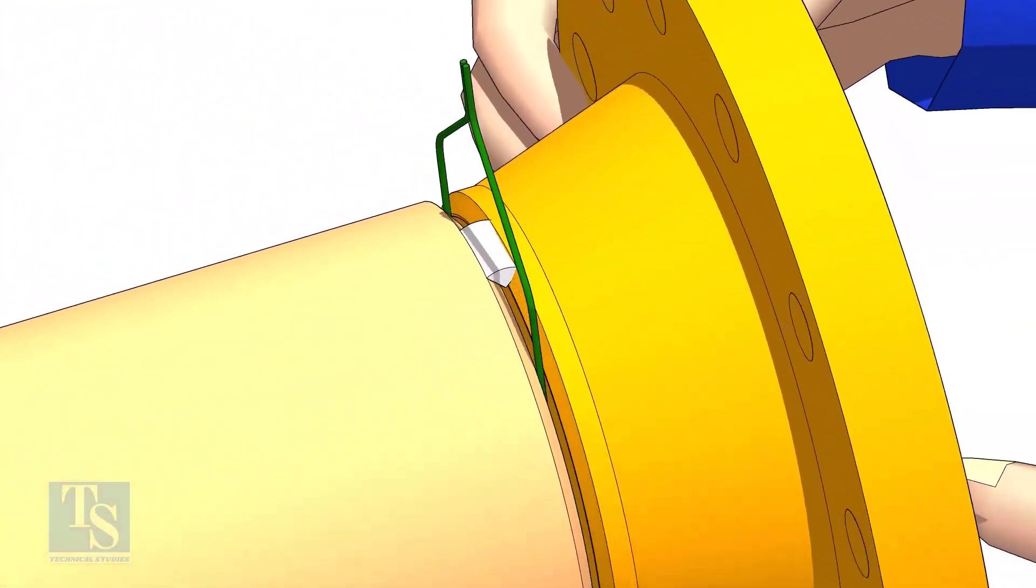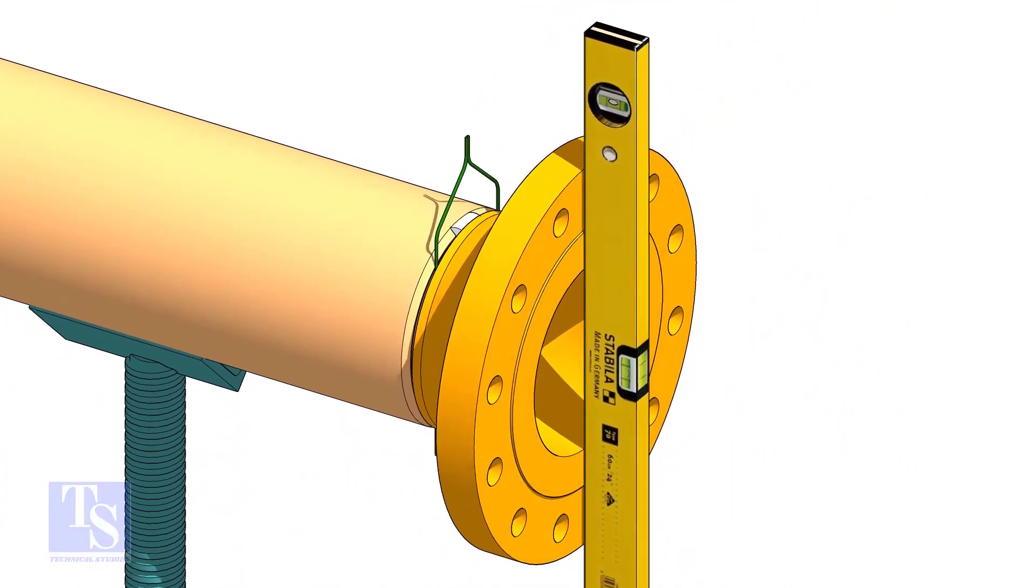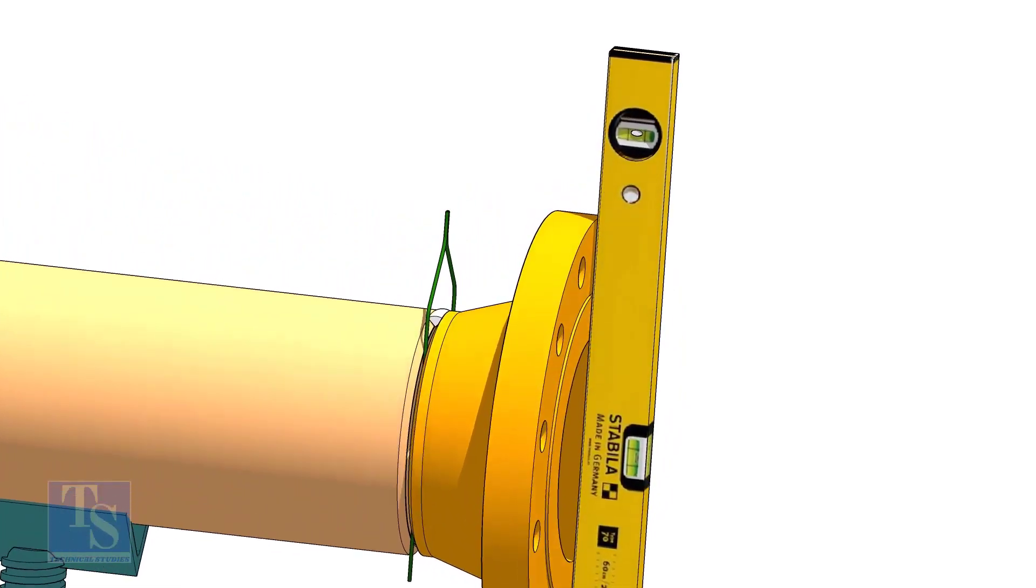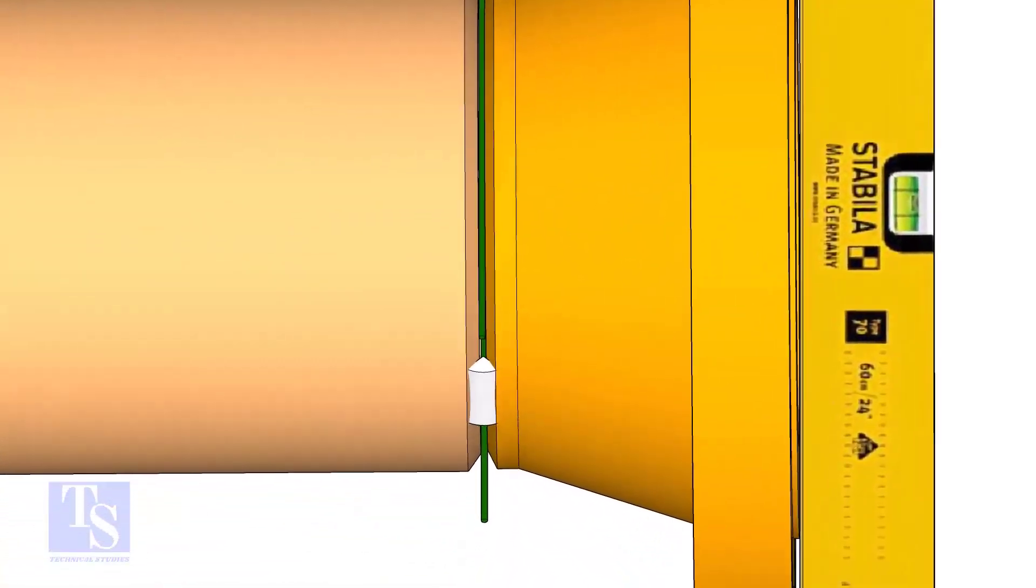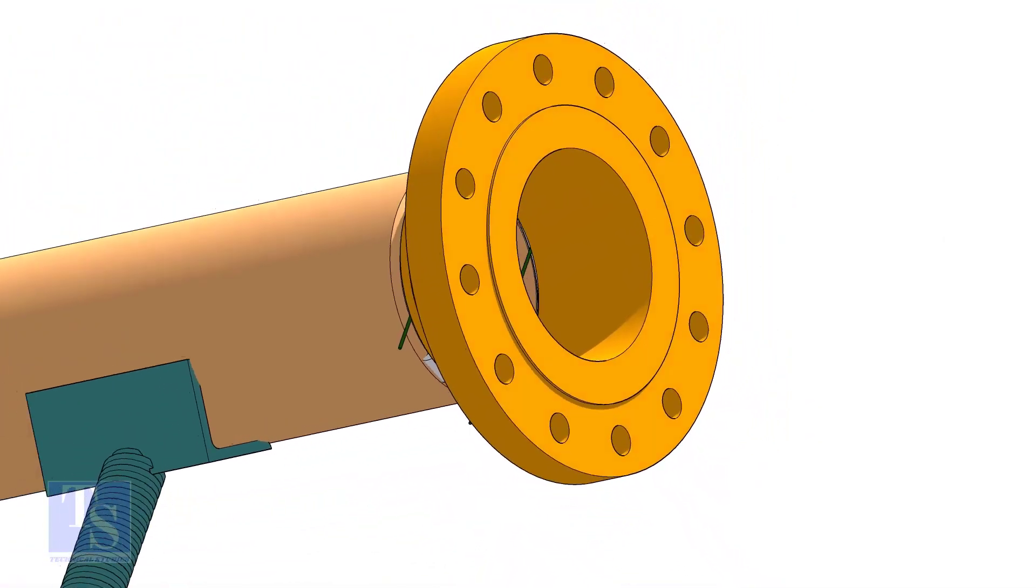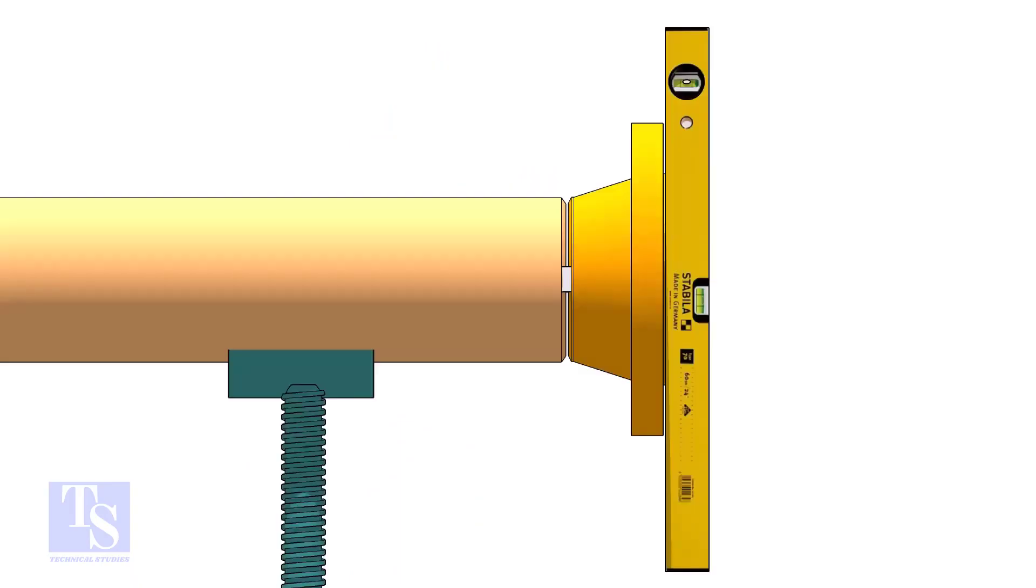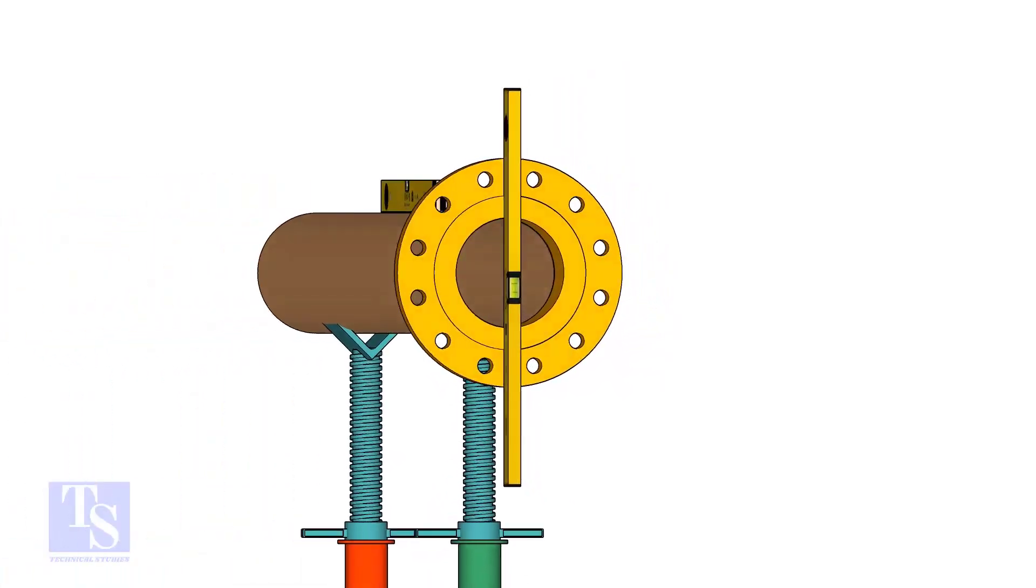Tack weld on the top side of the joint. Check the level of the flange vertically and tack weld on the bottom side of the joint. Rotate the pipe and flange 90 degrees to either side. Check the vertical level of the flange, if correct, tack weld on the top side of the joint.